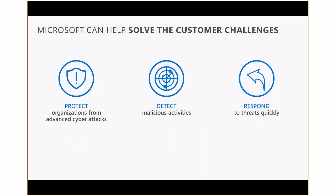That brings us to what our goals were for threat protection when we set out on the journey to create a holistic offering. One of the first goals was to protect against advanced cyber attacks — no matter what vector the attack comes from, we have strategies and tools in place to protect customers against those different attacks. The second goal was how do we detect an attack when it happens, by detecting anomalies and suspicious behavior in the network. And then once detected, how do we quickly respond to minimize damage as much as possible?